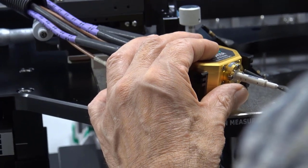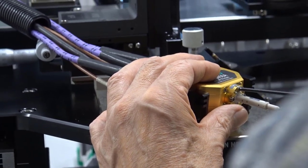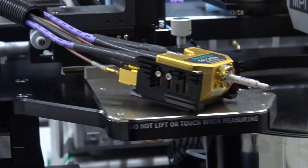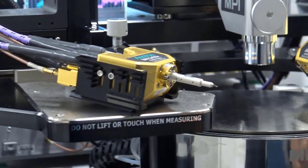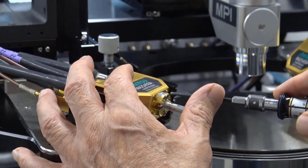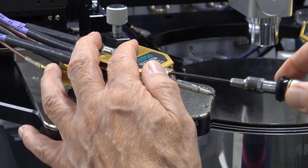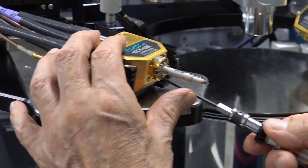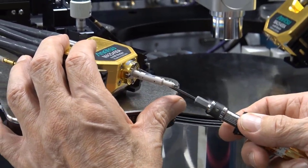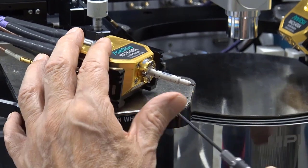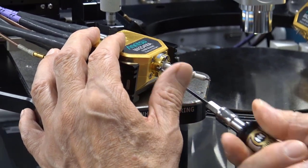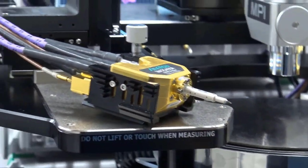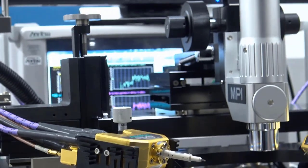And once you get it just snug, then you can go to your torque wrench to be sure that you're equally torqued. And so now we have our probe mounted onto the module.